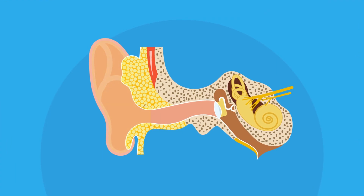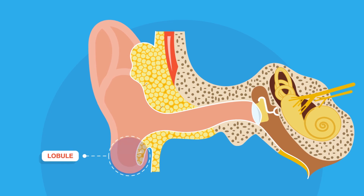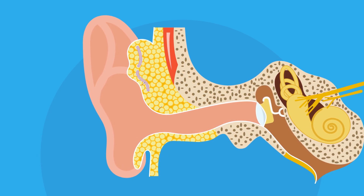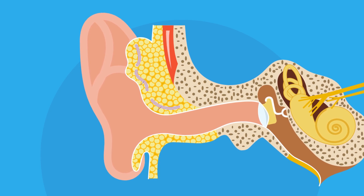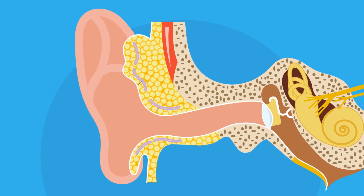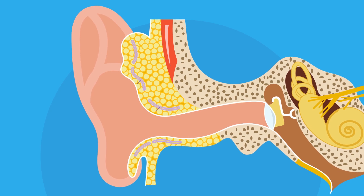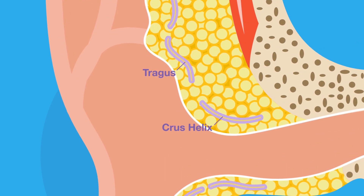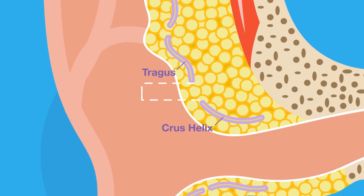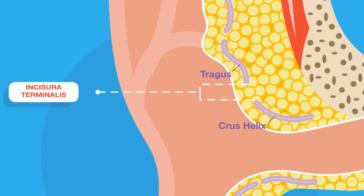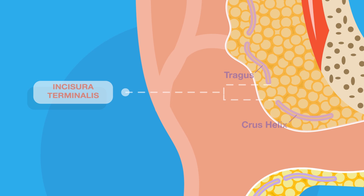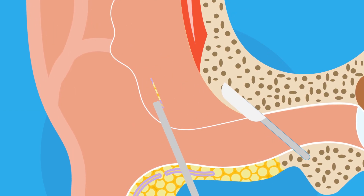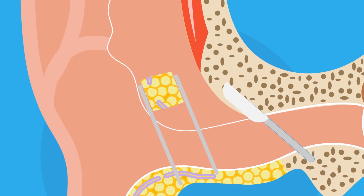The entire pinna, except its lobule which is made of fat, and the outer part of the external acoustic ear canal, are made up of a framework of a single piece of yellow elastic cartilage, which is then covered with skin. There is no cartilage between the tragus and crus of the helix, and this area without cartilage is called the incisura terminalis. An incision made in this area will not cut through the cartilage, since cartilage is unable to heal properly.